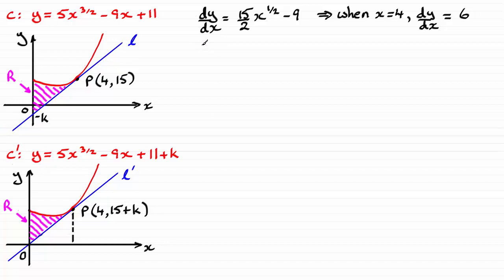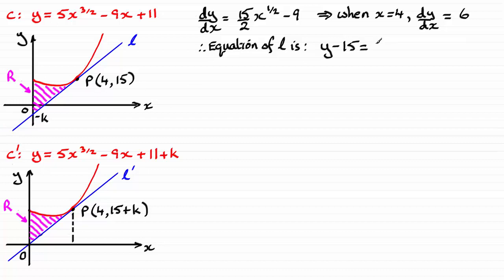Now we should be in a position to find the equation of line L. Using y minus y1 equals m times (x minus x1): y minus 15 equals 6 times (x minus 4). All I want to find out is where that line L crosses the y-axis, and that's going to be when x equals 0. Putting x equals 0 in, we get 6 times minus 4, which is minus 24. Then adding 15 to that gives us a y value of minus 9.